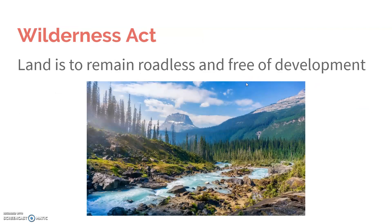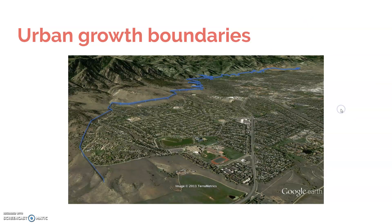We'll talk more later about some solutions to the issues with urbanization. Right now I want to talk about the Wilderness Act, which basically says that land has to be robust and free of development — it preserves areas in order to preserve biodiversity, so there can be no development whatsoever. Another important thing are urban growth boundaries — I believe this is Boulder — which literally means that you cannot build anything beyond this boundary. It forces people to be creative with the space they have, fill in little spots, build up if possible.